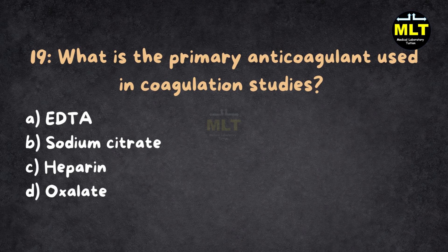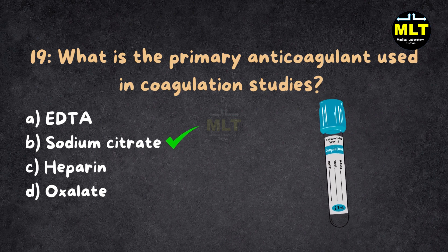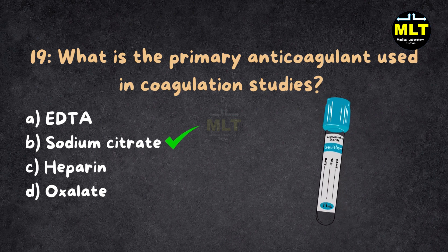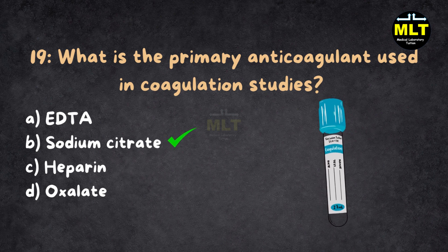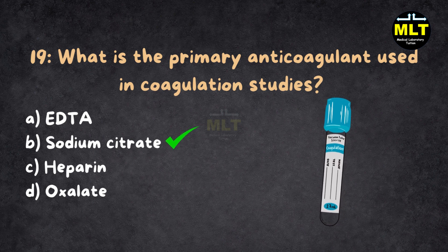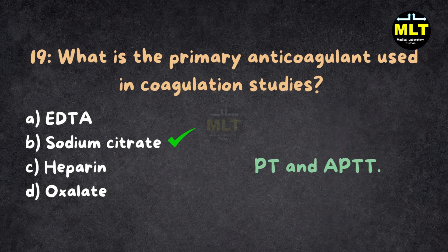Correct answer: B. Sodium citrate. Explanation: Sodium citrate binds calcium, preventing clotting. It is crucial for coagulation tests like PT and APTT.